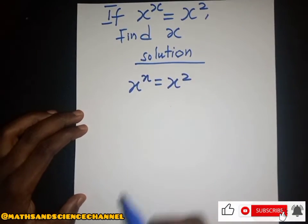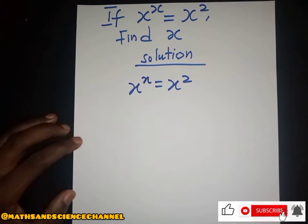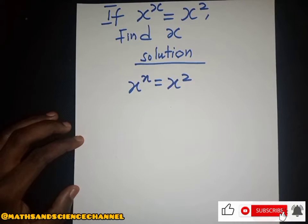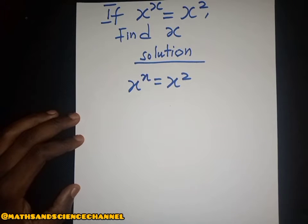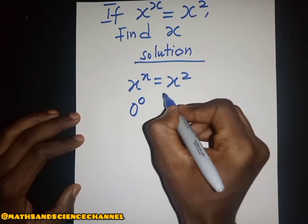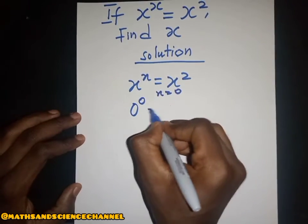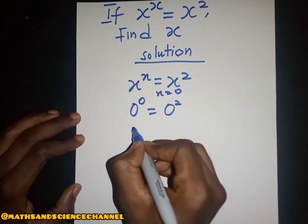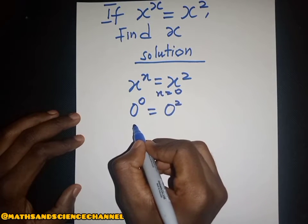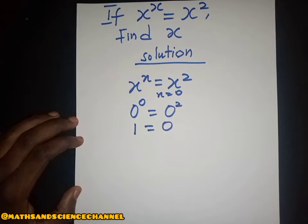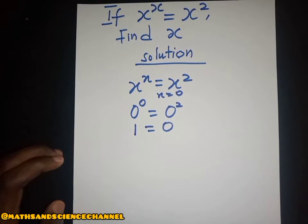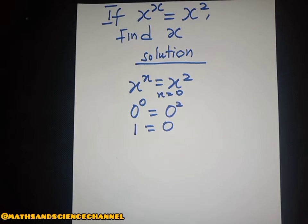Now if you look at this expression, you realize that if we assume x equals zero, that cannot be a solution. Why? Because when we plug in zero, we are going to get something like this — x to the power zero is one, and this is going to be equal to zero — which gives us an indeterminate form.